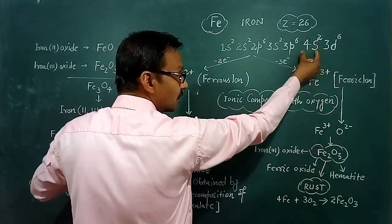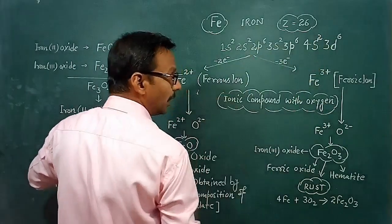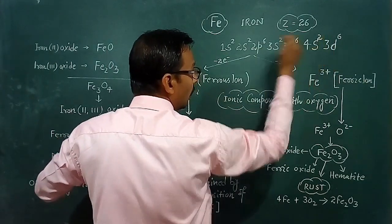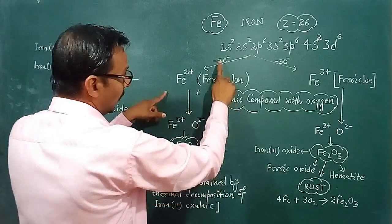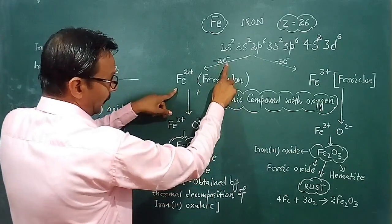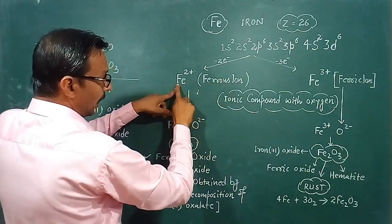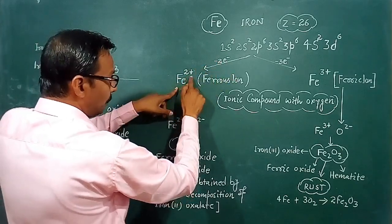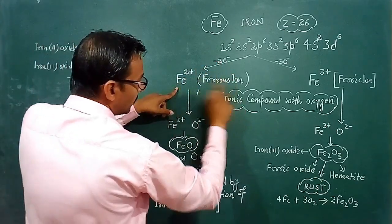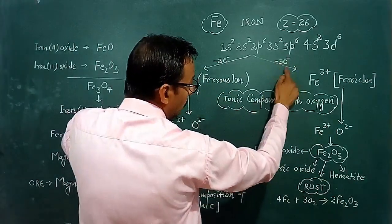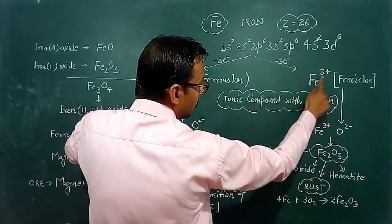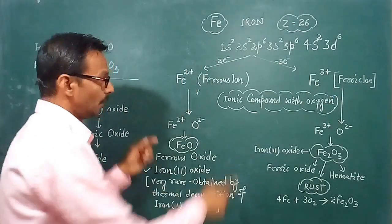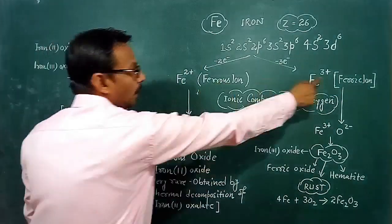In the 4s orbital there are 2 electrons and in the 3d orbital there is 1 electron. If we lose two electrons, we get the Fe2+ ion — the ferrous ion. When we lose three electrons, we get the Fe3+ ion — the ferric ion.